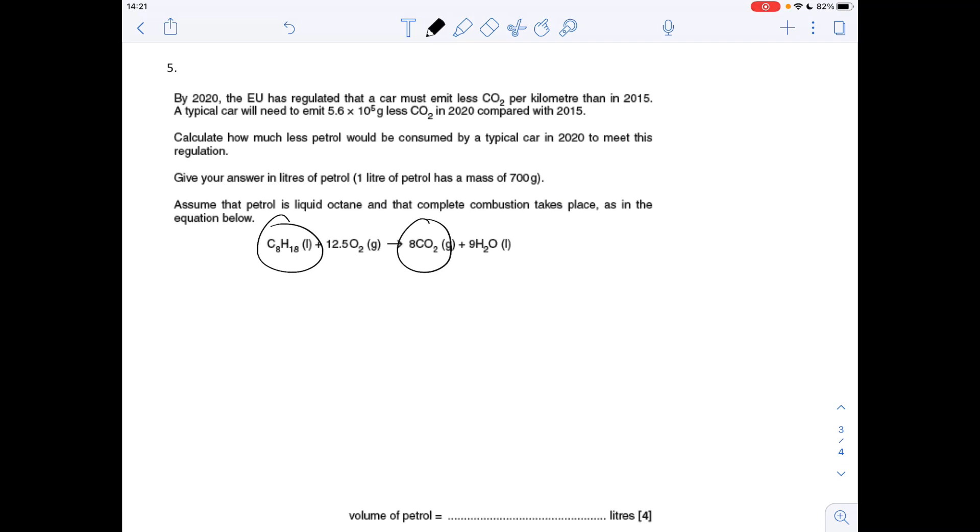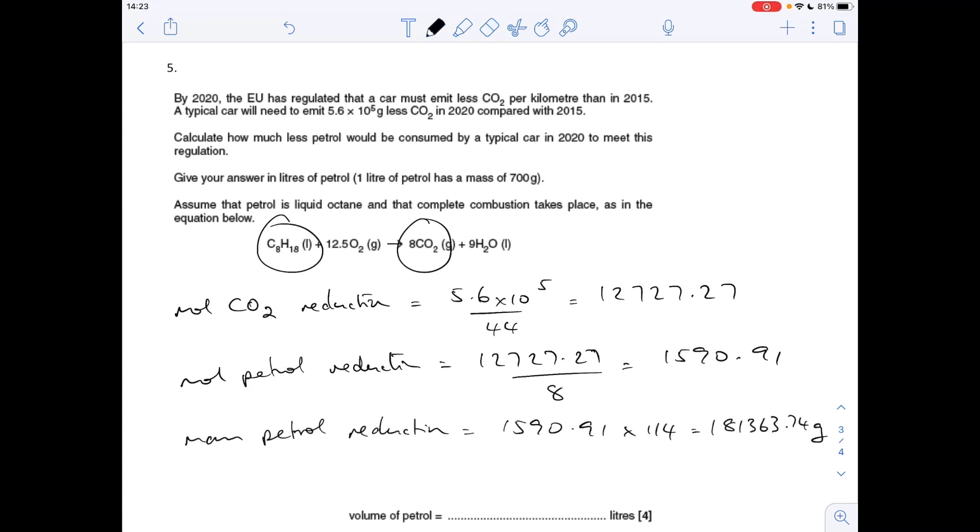We're going to use the mole ratio to get to that and then turn that into grams for the octane, and then we can turn that into liters. The moles of CO2 that have to be reduced is the mass over the Mr, so that's 127.27. The moles of petrol that would be reduced because of that is going to be an eighth of that from the mole ratio, so that comes out at 15.909. The reduction in mass of petrol is just going to be moles times Mr, so that comes out at 1813.74 grams.